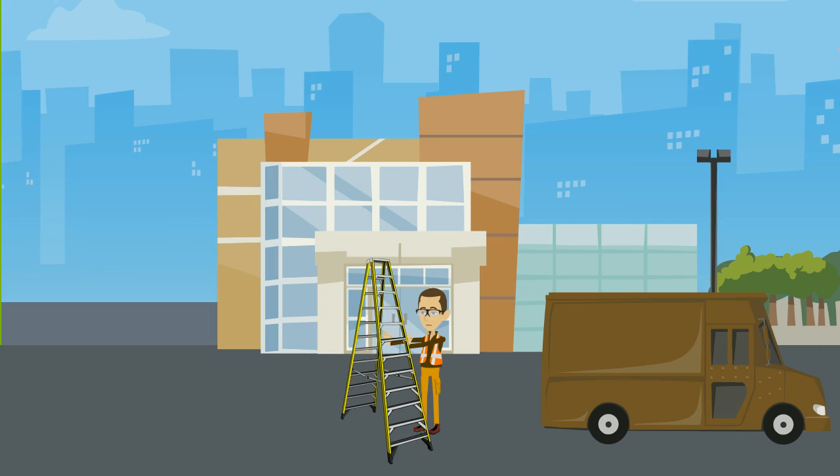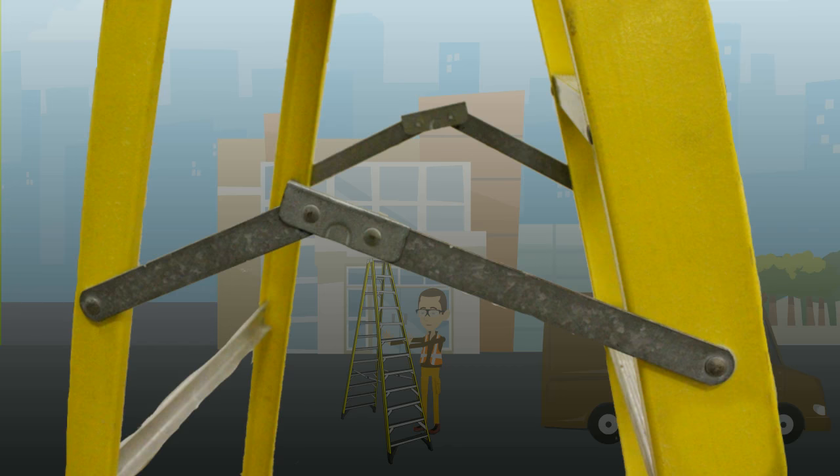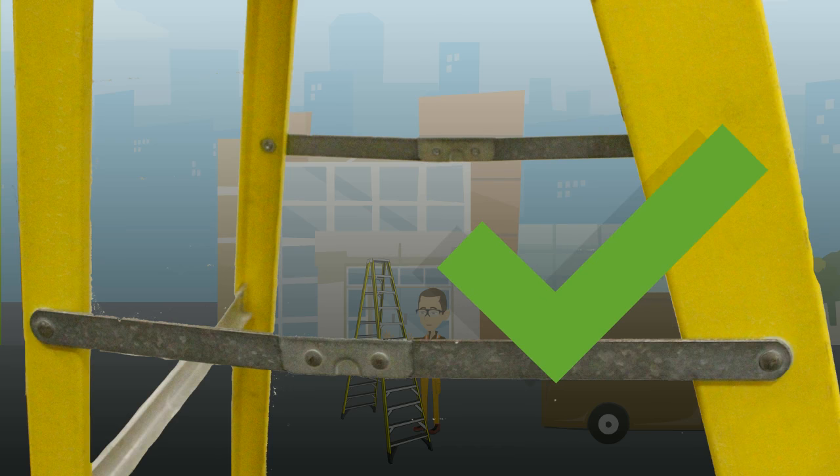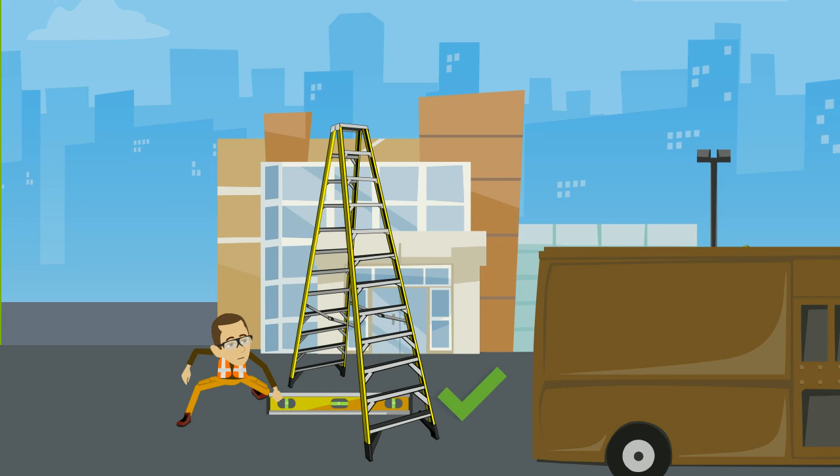When opening a step ladder, make sure the two hinged metal braces called spreaders are locked down and are straight. Never set up a step ladder on an uneven surface. Each of the feet must make firm contact with the surface of the ground or floor.